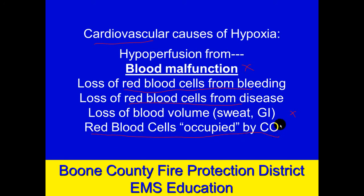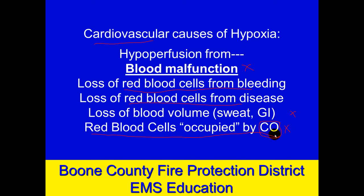Another volume issue involves carbon monoxide — CO. Red blood cells have space for carrying oxygen, but CO attaches to those red blood cells very readily and doesn't let go. A red blood cell makes a trip out to the periphery and back about every 20 seconds — roughly three times a minute. If the delivery truck goes out full of CO, there's no place for oxygen to ride. So you can be hypoxic simply because CO has occupied the red blood cells.